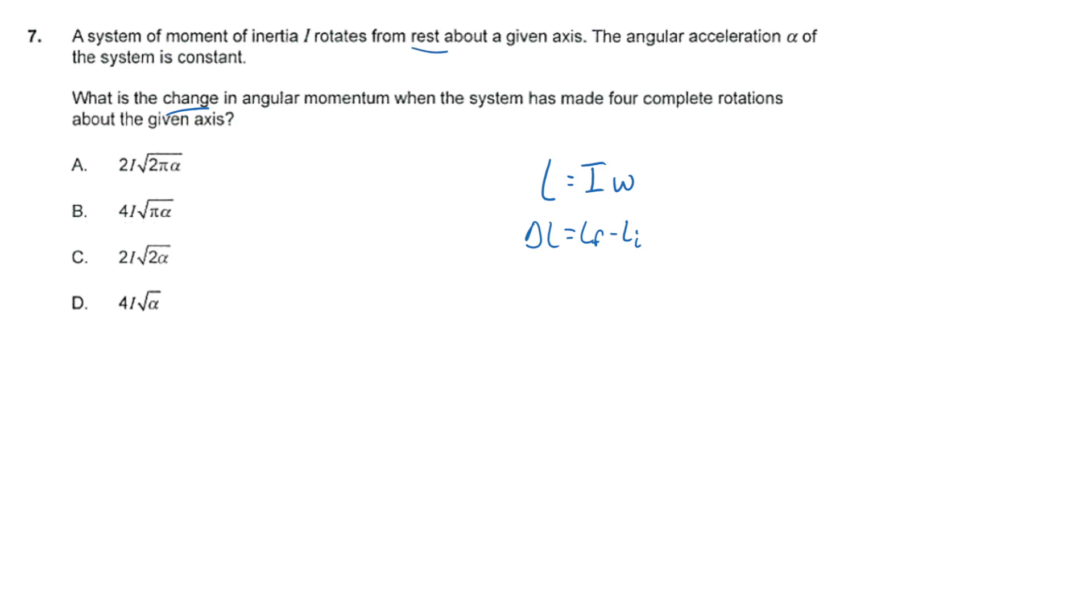And what starting from rest means is that our initial angular velocity is zero radians per second. And when we take that zero and multiply it by the moment of inertia, we still have zero. So delta L is equal to L sub f. And we can just say that this is equal to the moment of inertia times the final angular velocity.